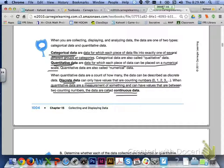When you are collecting, displaying, and analyzing data, the data are one of two types, either categorical or quantitative. Categorical data are data for which each piece of data fits into exactly one of several different groups or categories. Categorical data are also called qualitative data. Quantitative data are data for which each piece of data can be placed on a numerical scale. Quantitative data are also called numerical data.